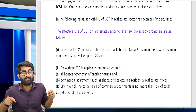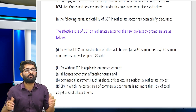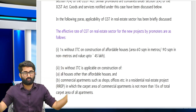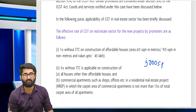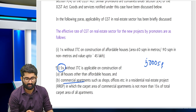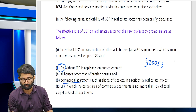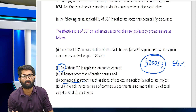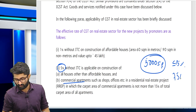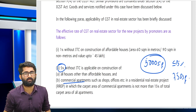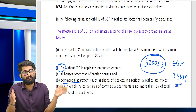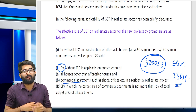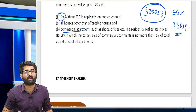Commercial apartments such as shops, offices, etc. in a residential real estate project (RREP) where the carpet area of the commercial apartment is not more than 15% of the total carpet area of all apartments attract 5% GST. For example, if the total carpet area is 5,000 sq. ft., then 15% is 750 sq. ft. — the commercial apartments can be given up to a maximum of 750 sq. ft. for the 5% rate to apply.